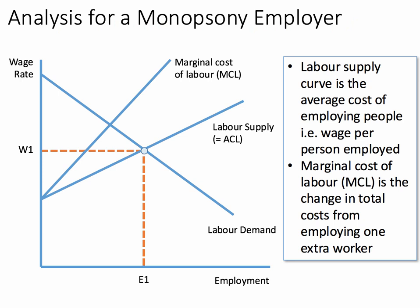The marginal cost of labour, MCL, is the change in total labour costs from employing one extra worker. And you should know from your understanding of marginal cost and marginal revenue that a profit-maximising employer will employ people up to the point where the marginal cost of labour equals the marginal revenue product of labour.